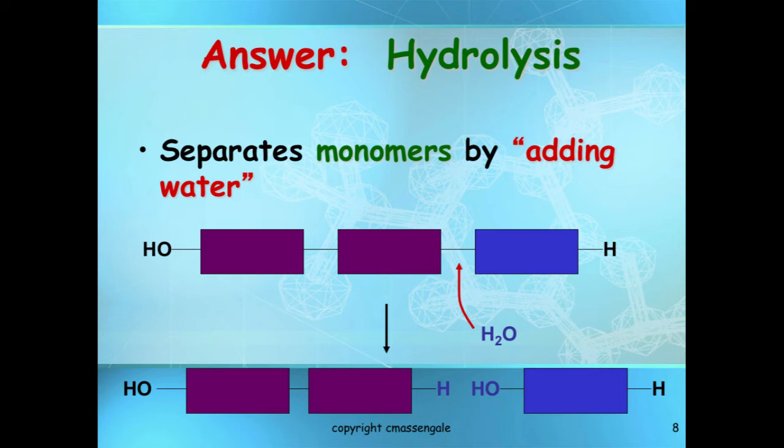So to make a polymer you also have water as a byproduct, and to make monomers by separating a polymer you have to add water. Take a second and think about that because it can be extremely confusing. Dehydration — water is coming out. Hydrolysis — water is going in.